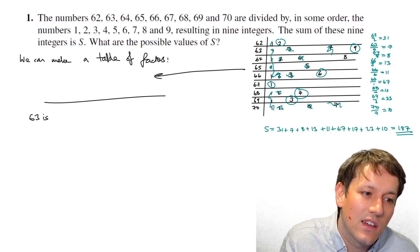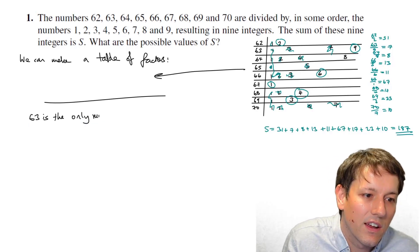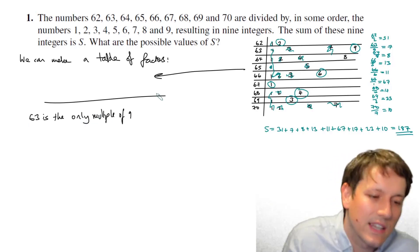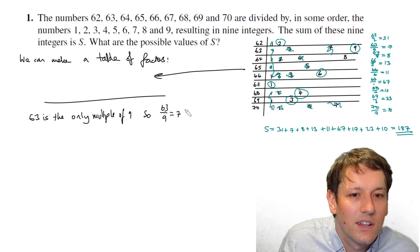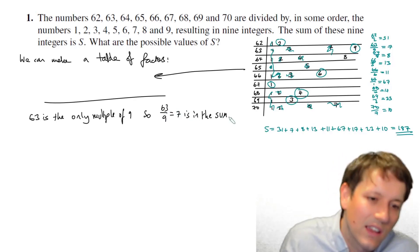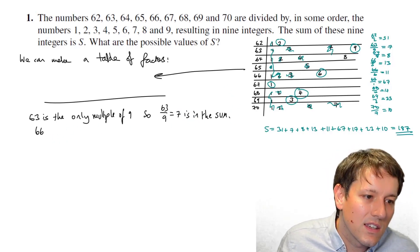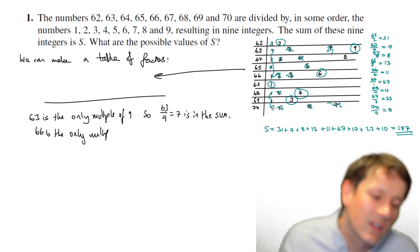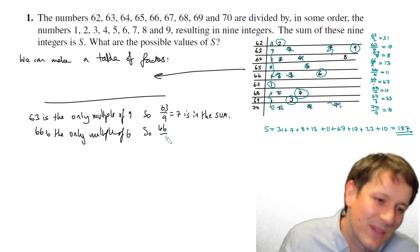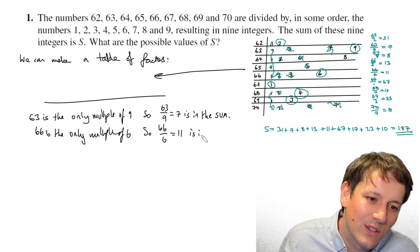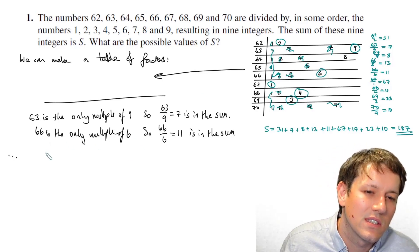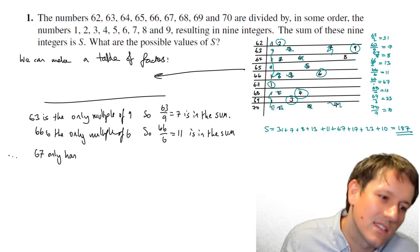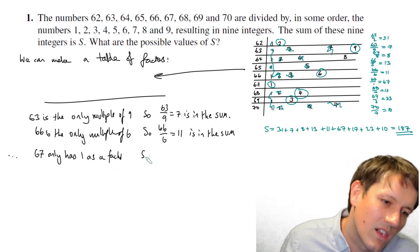So what was the first thing I noticed? I think I noticed that 63, right, is the only multiple of nine. Okay, so we wrote that down. So 63 over nine equals seven is in the sum. Let's just say that. I think that's quite clear. We also said 66 is the only multiple of six. Sorry about my handwriting. I'll try and make it better as we go through. So 66 over six is 11 is also in the sum. And actually then, we're just going to keep doing a sequence of lines like this, right?